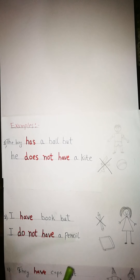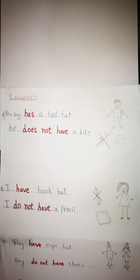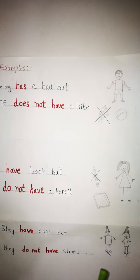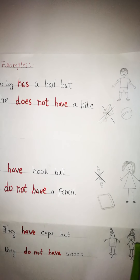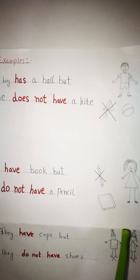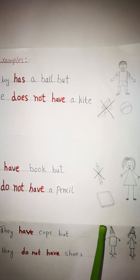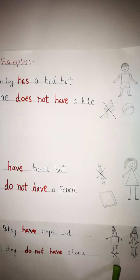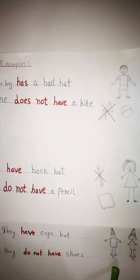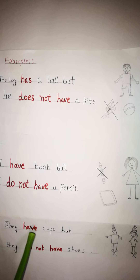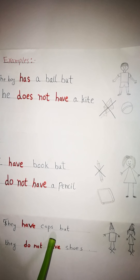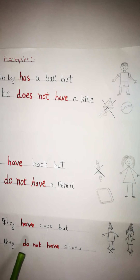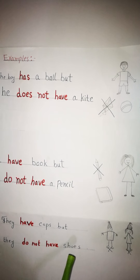In the third example, look at this picture. There are two students. They have caps on their heads. Look at their feet — they do not have shoes. So we will say: they have caps but they do not have shoes.